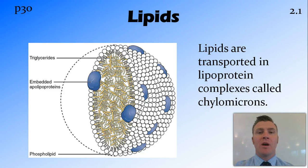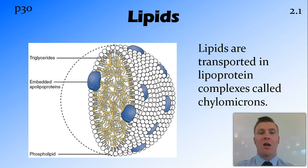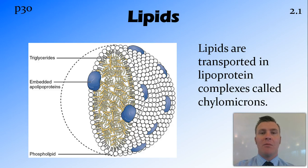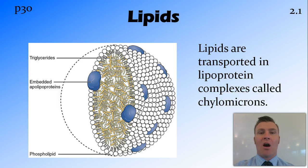Lipids — and you'll remember that lipids are fats and oils — are not able to be dissolved in water. So they're transported in special complexes called chylomicrons. These are phospholipoprotein balls. They have lipids on the inside of them, similar to the phospholipid bilayer found in cells. They have their hydrophobic tails on the inside, and lipids are able to dissolve into these hydrophobic tails and move around the body within those particles.